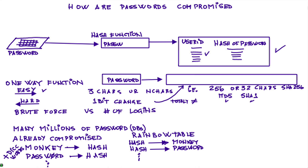It's called a rainbow table — a fancy name, supposedly because you get a treasure at the end of the rainbow. That table is essentially the reverse of the password database: instead of user ID and hash, this table has a hash and the password that was used to create it. So if someone is given a hash, all they have to do is look it up in this table — computers do that very fast — and they can tell you what password generated that hash.